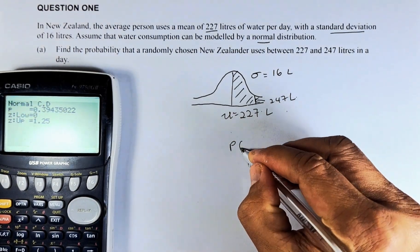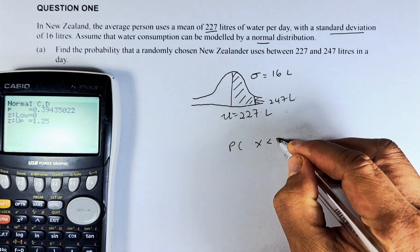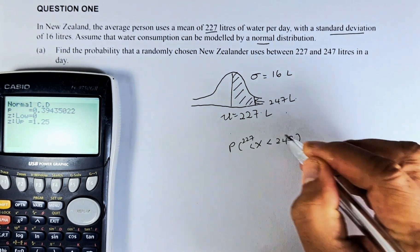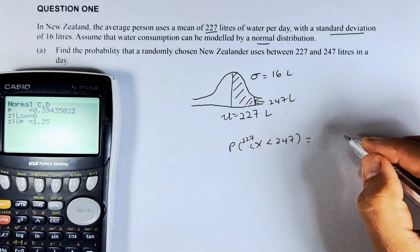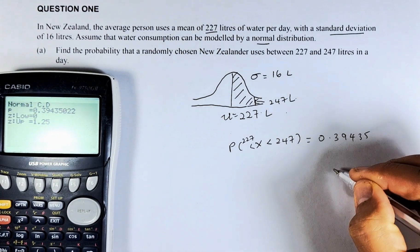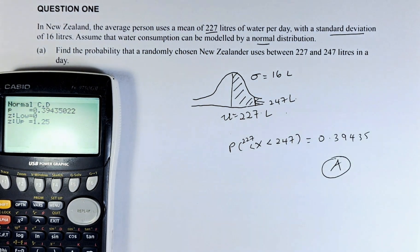So probability of X between 247 and 227, the area is going to be 0.39435. And that is an easy achieve.